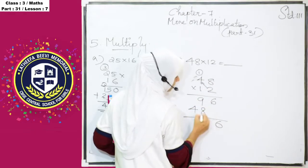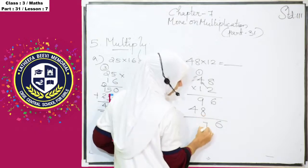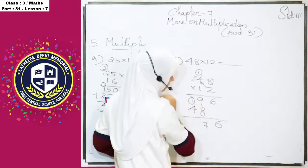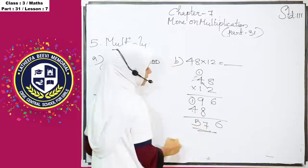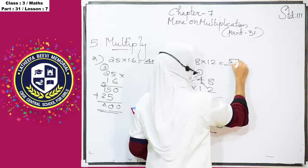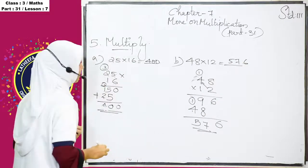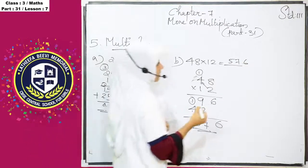6, 9 plus 1, 10 plus 7, 17, 1 is carry over, 4 plus 1 is 5. So, the next answer is 576. Then, the next question is, that is question C.